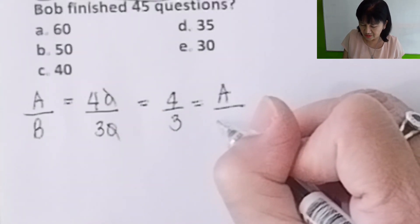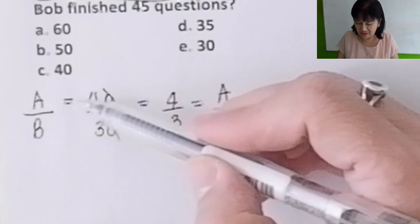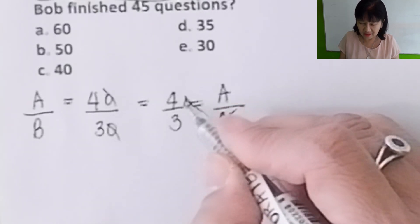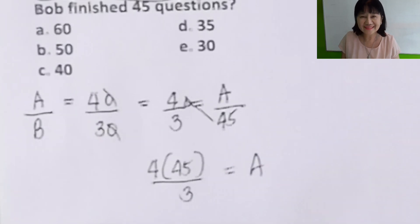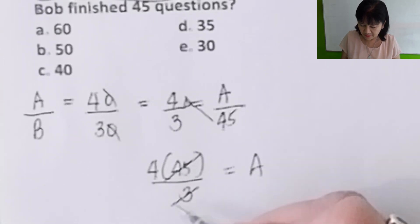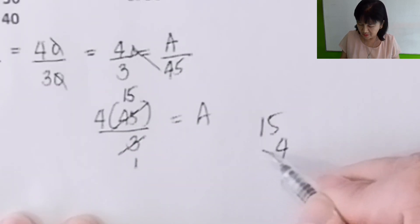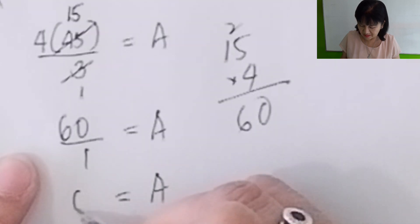If you're answering questions like this, just cross multiply. Take a shortcut: you get 4 times 45 divided by 3 gives you A. Don't multiply 45 and 4, that will take a long time. You just have to cancel: 45 divided by 3 is 15. 3 divided by 3 is 1. 15 times 4, 20 carry 2, that's 60 over 1 is A. So A is equal to 60. The correct answer is letter A. We're done with part 6.